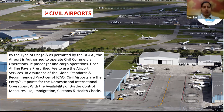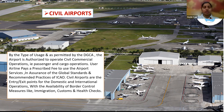Civil airports at entry and exit points for domestic and international operations have availability of border control measures like immigration, customs, and health checks. Once you start your onboarding procedures, you need to go through the immigration part, customs, and health checks. These are mandatory operations done to ensure the safety of passengers.